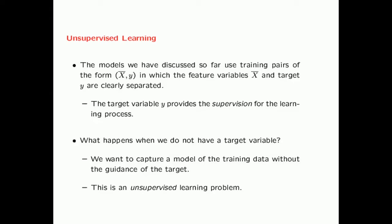A natural question arises as to what happens when we do not have a target variable. Imagine a situation where we want to capture a model of the distribution of the training data without the guidance of the target. This problem is essentially an unsupervised learning problem.